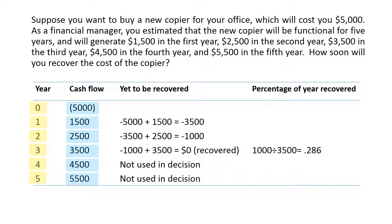To get started, I will use the cash outflow or initial outlay, which is minus $5,000, and add to it the cash inflow for the first year, which is $1,500. The answer is minus $3,500, which means I'm still to recover my initial outlay. So I will move to the next step. Starting with minus $3,500 and adding the cash inflow for the second year, which is $2,500, the answer will be minus $1,000. It means I'm still short $1,000, so I will continue. Minus $1,000 plus the cash inflow for the third year, which is $3,500. Obviously, the $3,500 will cover our remaining outlay of $1,000, so the answer is zero — the amount is recovered.